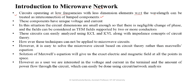These components have a unique voltage and current. If I consider a resistor with some voltage applied, we can say R1 has a specific single voltage drop. The circuit dimensions are very small — small enough that there is negligible change of phase and field. If a 50 hertz signal is present, the wavelength comes in kilometers. Compared to that wavelength, the resistance size is very small, so we can say the resistance has a unique voltage. These circuits can be analyzed using KCL or KVL — Kirchhoff's Voltage Law and Kirchhoff's Current Law — along with impedance concept or circuit theory.